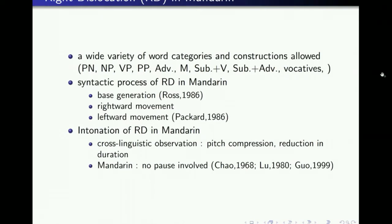Right dislocation is very common in colloquial Mandarin, which refers to the grammatical phenomenon in which a sentence process has a component standing to the right of what we normally take to be the sentence-final boundary. Unlike English and other Western languages, which require the right-dislocated element to be co-referential with a main clause referent, RD in Mandarin occurs with a wide variety of word categories and constructions.